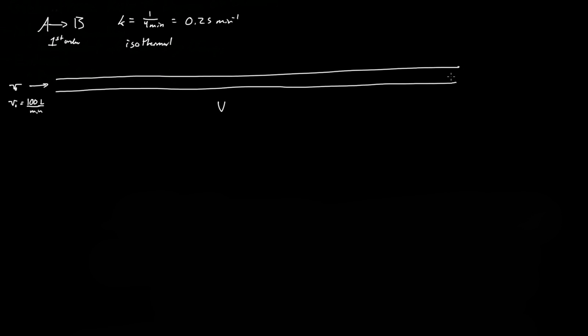If we assume it's a perfect pipe that isn't expanding, then the outlet volumetric flow rate is also 100 liters per minute, equal to V₀.